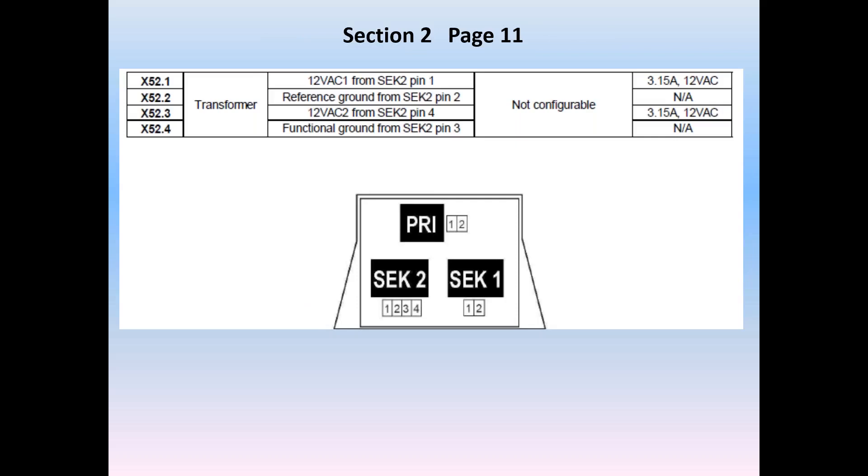The transformer on the LMV-5 has a single line voltage input, shown here as PRI, the primary. Below that, SEK2, are the two 12 volt AC secondaries that are in fact out of phase. So while the CAN bus only has 12 volts potential along its length, the actuators are supplied with 24 volts AC. The third is a final secondary winding, and it is 12 volt AC, and it powers the LMV-5 internal electronics.